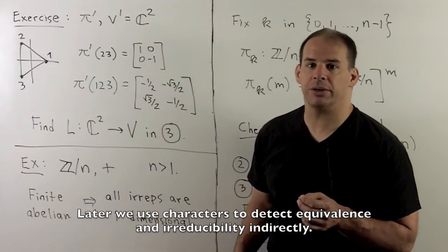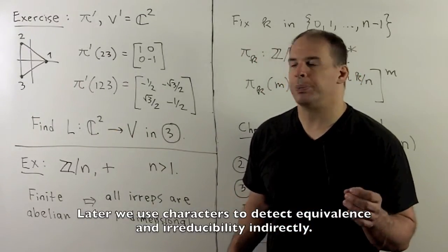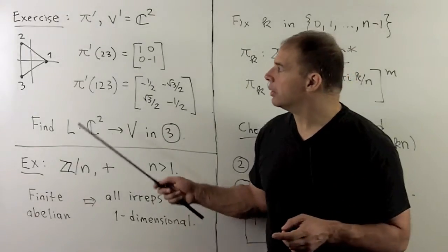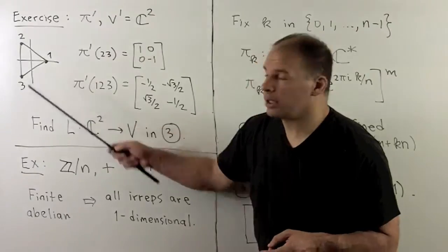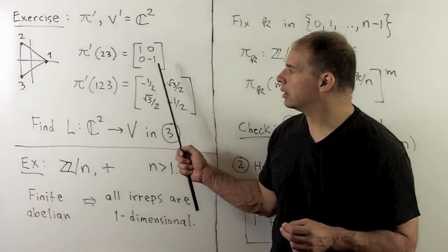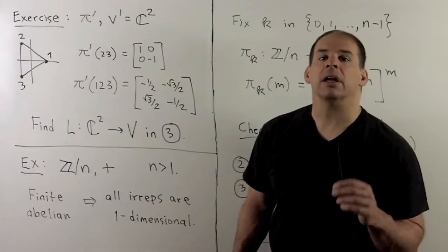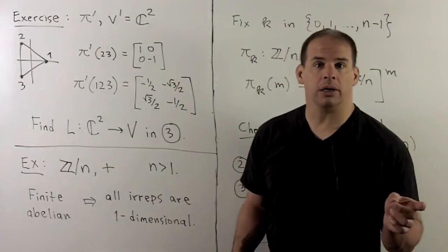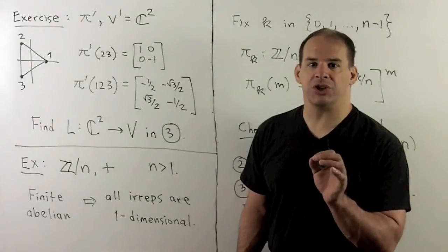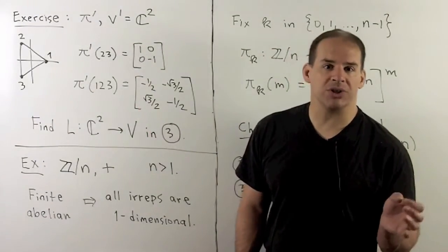Another way to think of the two-dimensional representation: let V prime equal C². Take an equilateral triangle centered at the origin in R², and label the vertices. Then let S3 act on R² by permuting these labels. For instance, the transposition (2 3) switches the 2 and the 3, giving reflection across the x-axis; with respect to the standard basis we get the matrix [1, 0; 0, -1]. For the element (1 2 3), that's rotation counterclockwise by 2π/3, giving a corresponding matrix. We extend the action on R² naturally to C², and that gives us an irreducible representation of S3. Exercise: find the equivalence between this pi prime and the two-dimensional representation on the previous board.